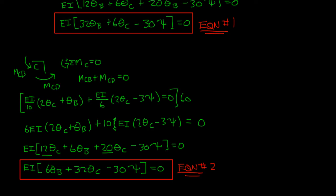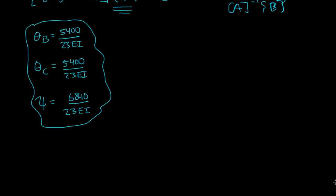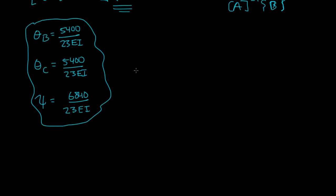I'm not going to do that. What I will do is give you the answers if you want to work out these problems and see if you're correct. MAB should be about negative 109.565 kilonewtons per meter.